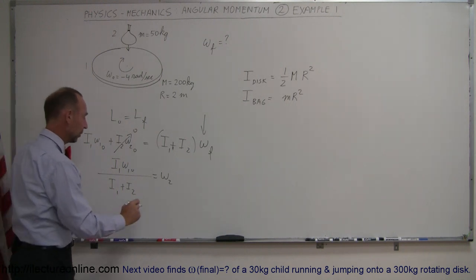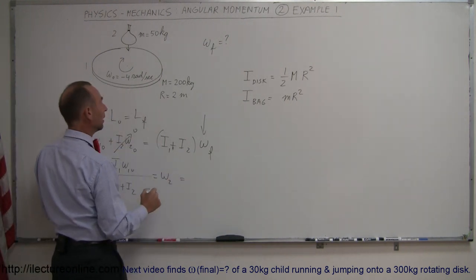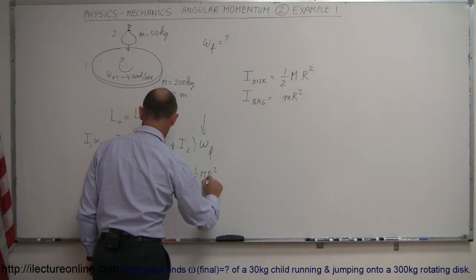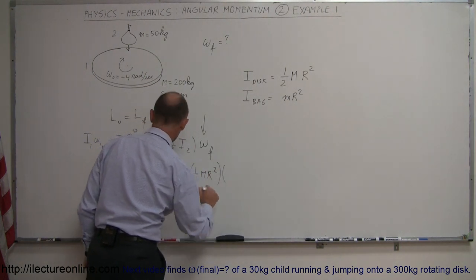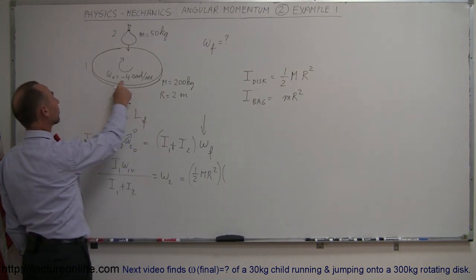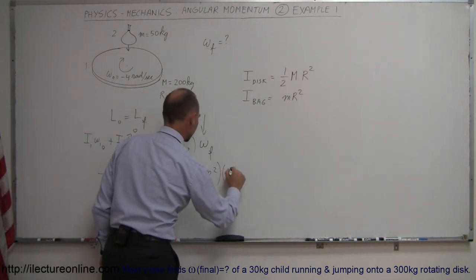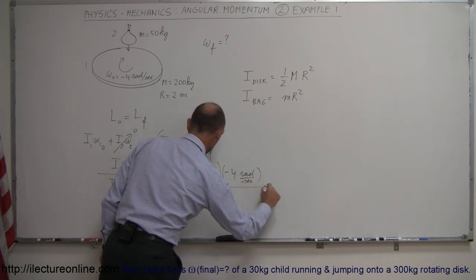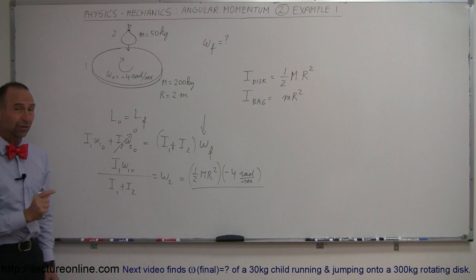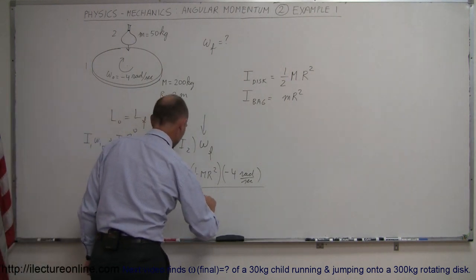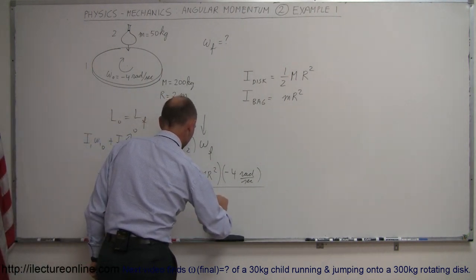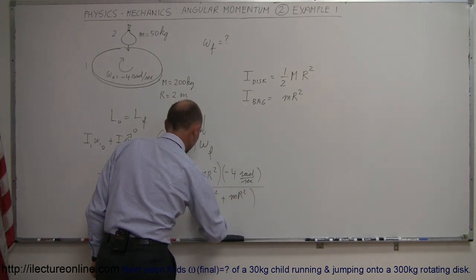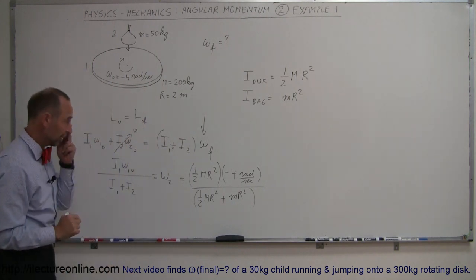So now we can go ahead and plug in all the numbers that we have. So I₁ is going to be I of the disc, which is one-half the mass of the disc times the radius squared. We're going to multiply that times the initial angular velocity, which is minus 4 radians per second. And then we divide that by the sum of the moment of inertia of both the disc and the bag of sand.